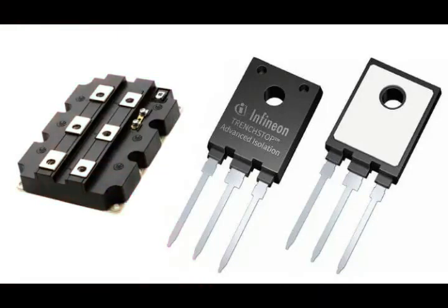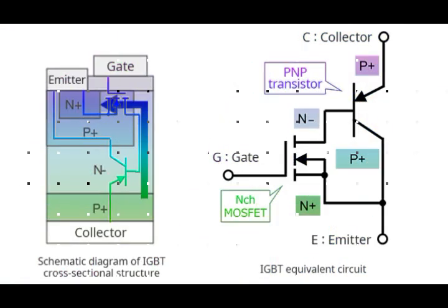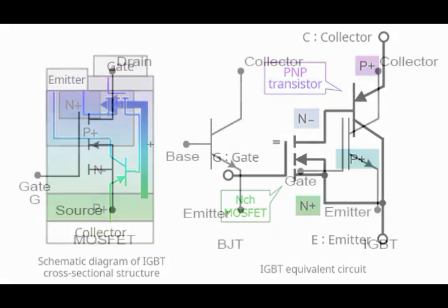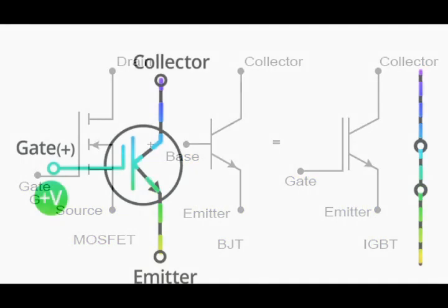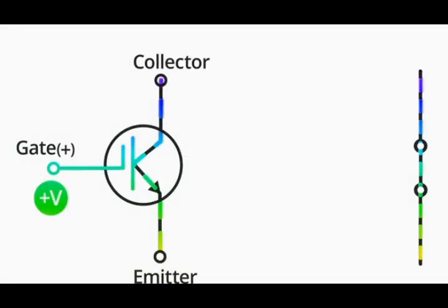As the name suggests, IGBT is equipped with isolated gate MOSFET technology and also has a common bipolar transistor. The result of such a combination has the output switching and conduction characteristics of a bipolar transistor but is a voltage controlled device like the MOSFET.